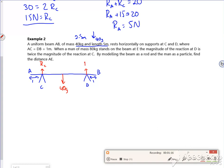Does it tell me anything strange about it? So I've got that. A man of mass 80kg stands on the beam at E, and the magnitude of the reaction at D is twice the magnitude of the reaction at C. So this RD is actually 2 lots of RC.